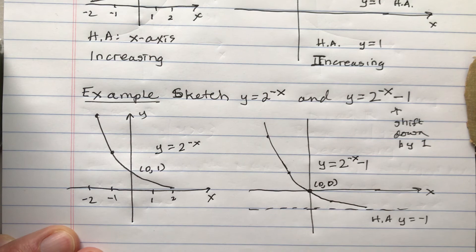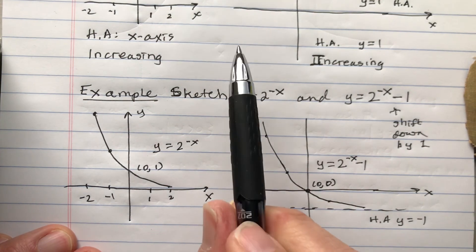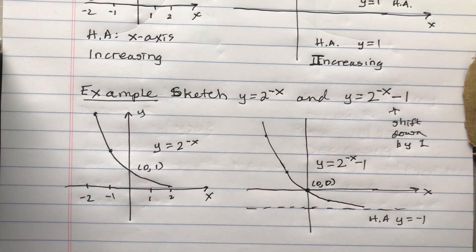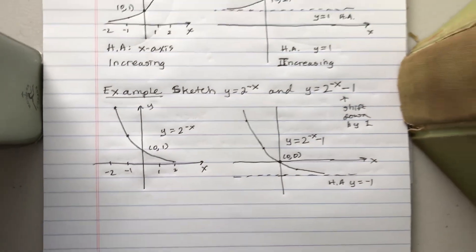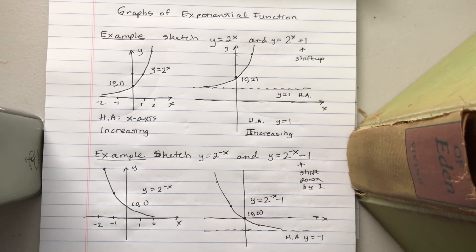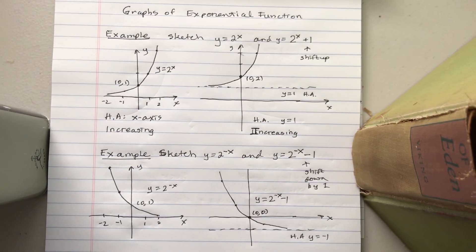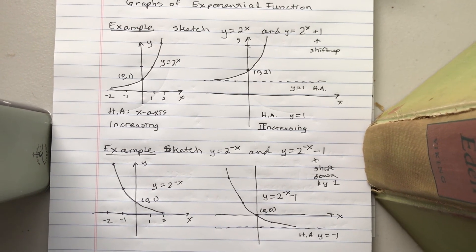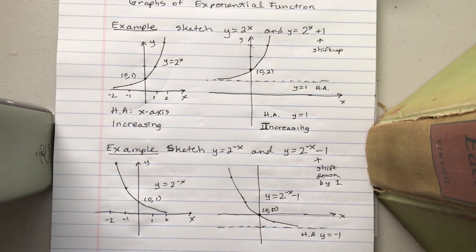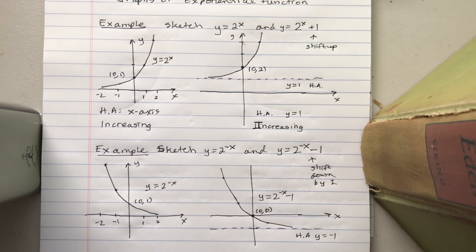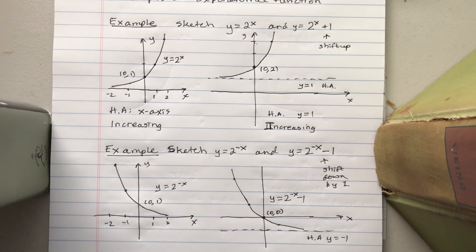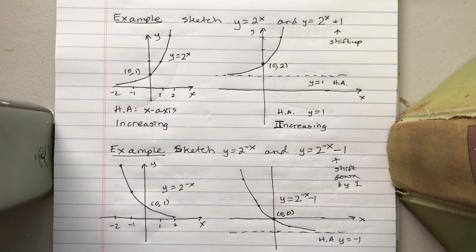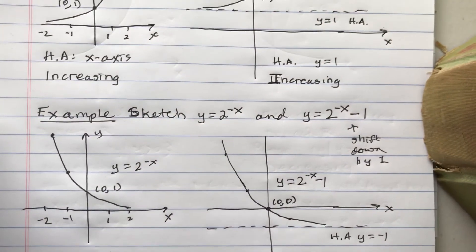Adding one will shift a graph up by 1. Subtracting one will shift a graph down by 1. Here we have 2 to the x — increasing exponential growth — shifted up by 1. And then I did an example with 2 to the minus x, which gives exponential decay, and an example where it's shifted down by 1.